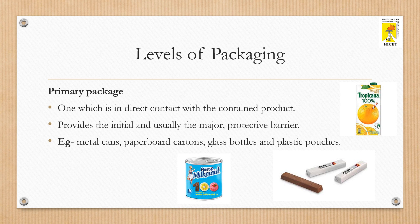Food packages have been classified into four levels such as primary, secondary, tertiary and quaternary package. A primary package is the one which will be in direct contact with the contained product and provides a major and initial protective barrier. Examples include metal can containing condensed milk, paperboard cartons containing a fruit beverage, glass bottles containing wine, and plastic pouches containing processed milk.